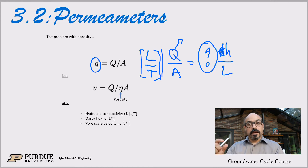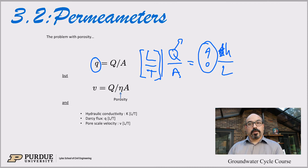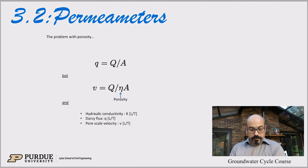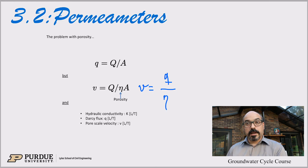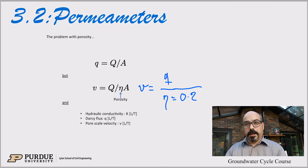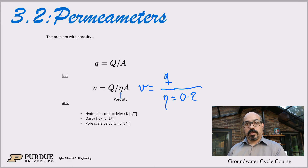That's not a velocity; it's a flux. The true velocity is higher because the pore space is only a fraction — maybe 20 to 30% — of the actual total volume of the column. Because there are solids, the water through the pores is actually much faster than the Darcy flux. The actual velocity is the Darcy flux divided by porosity. So if porosity is 0.2, the velocity is five times faster than the Darcy flux.